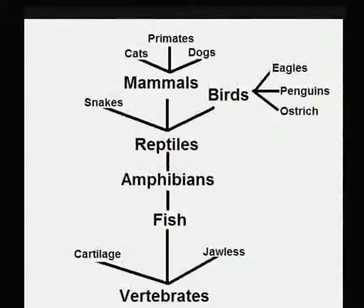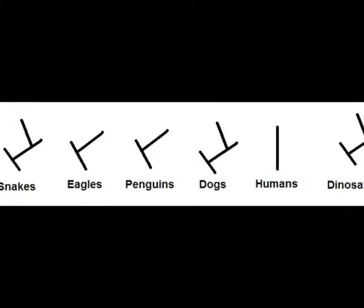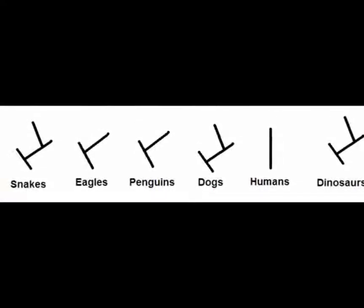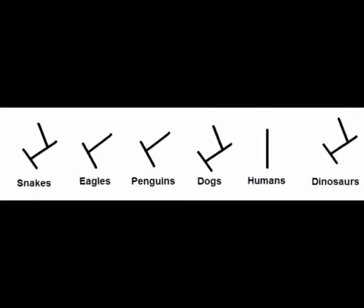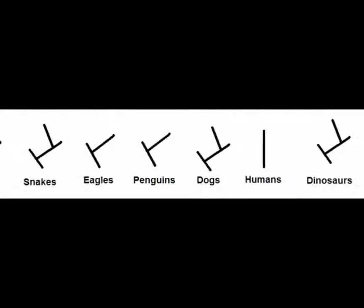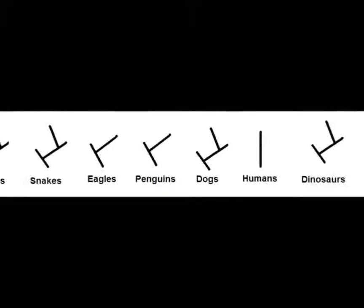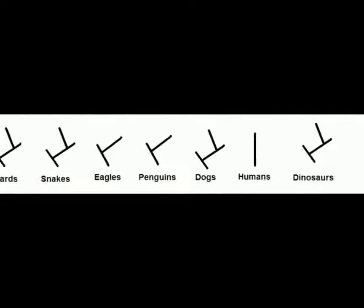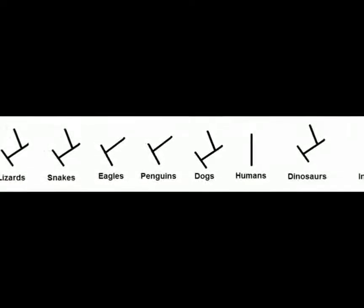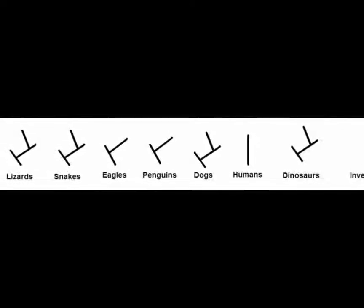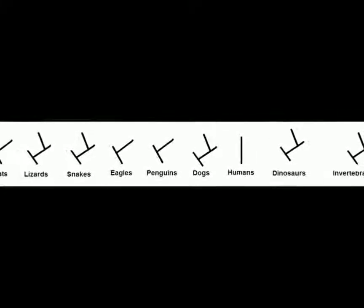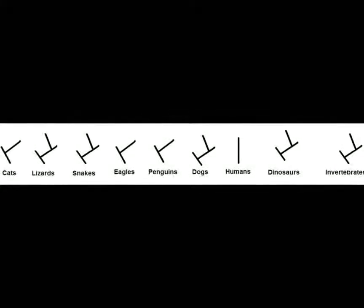This is the image dealing with creationism and exactly what it presents. The creationist concept has a very different explanation for how life arose. You can see all kinds arriving at the same time — cats, lizards, snakes, eagles, penguins, ostriches, invertebrates, and dinosaurs all arising at once, and from there going on to their individual species. I'm being generous here in allowing that several species can arise from the major types.